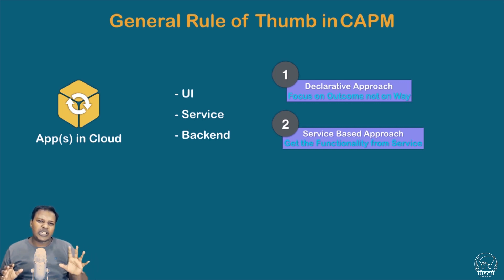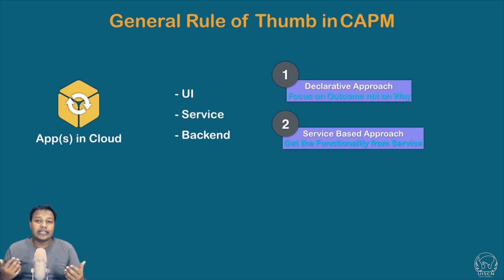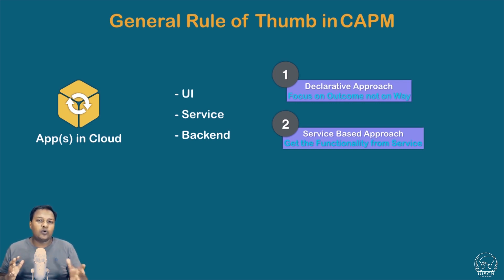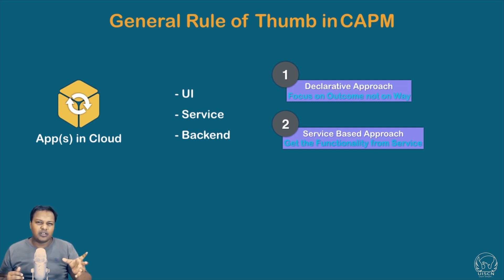Now let's look at some general rules of thumb when working with CAPM. CAPM basically follows two main principles. First is the declarative approach — instead of immediately thinking about table structure and service design, CAPM says to focus more on the functional side. The second is the service-based approach, which means you break down functionality into services. We'll get more clarity with an example using the LMS use case from the last section.